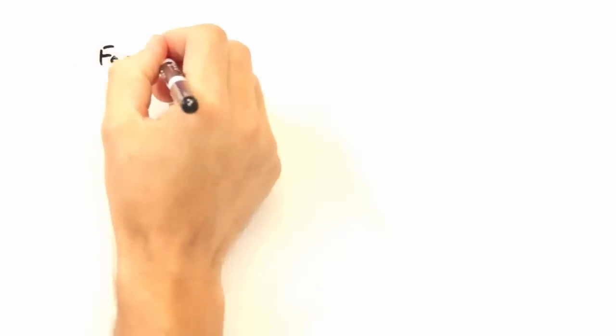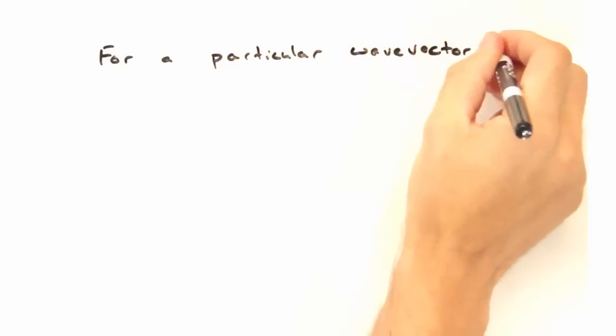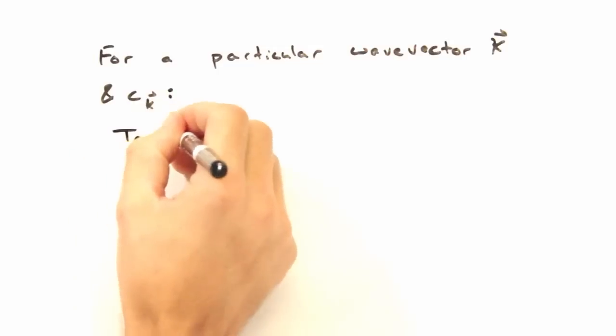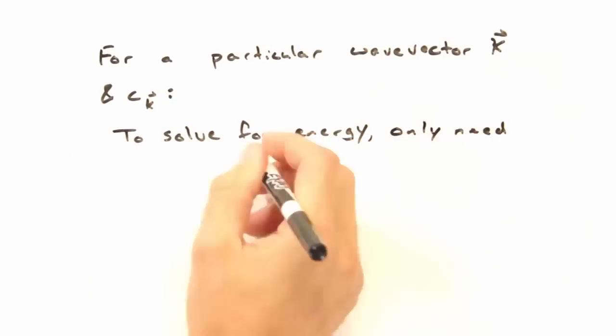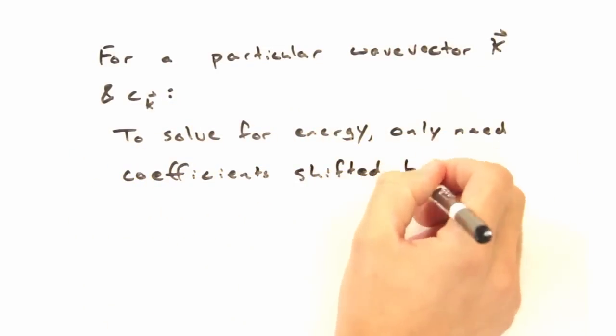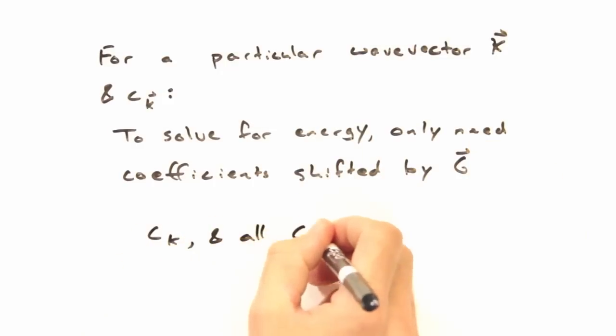What's unusual in this is, for a particular wave vector k, and its associated coefficient ck, the only other coefficients we need to know to solve for the energy are coefficients shifted by g vectors. To really see this, imagine a 1d line of k points.